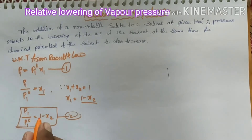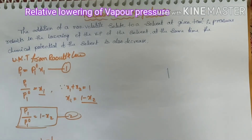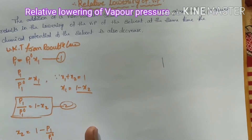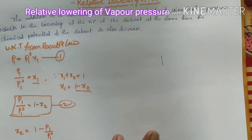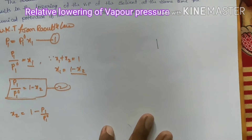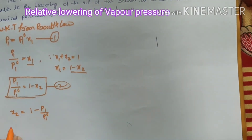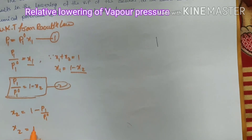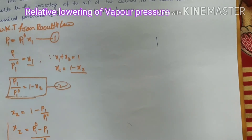Rearranging: x₂ = 1 − p₁/p₁⁰. Taking LCM, x₂ = (p₁⁰ − p₁) / p₁⁰. This is equation 3.